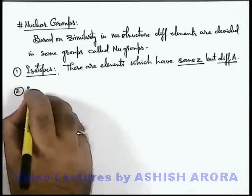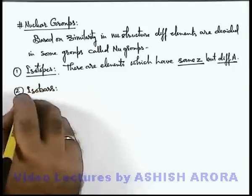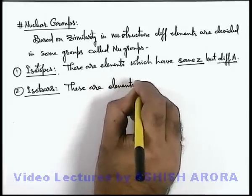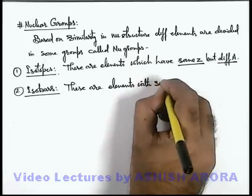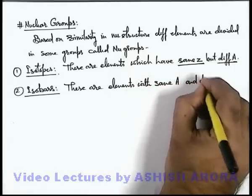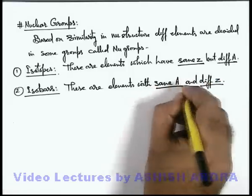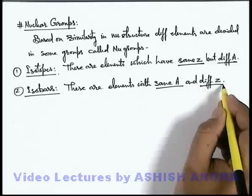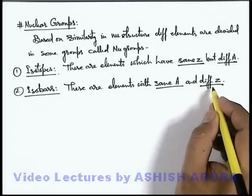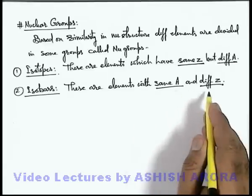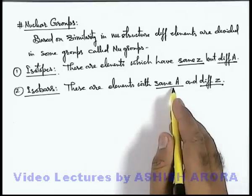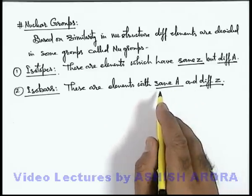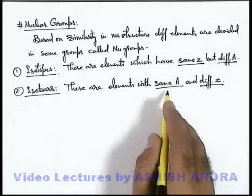The second nuclear group is isobars. These are elements with the same mass number and different atomic number. Here if atomic numbers are different, that implies in isobars the number of protons are different and number of electrons will also be different, so their chemical properties will also be different. But since they have the same mass number, those physical properties which are dependent on the mass of the nucleus will be the same in all isobars.